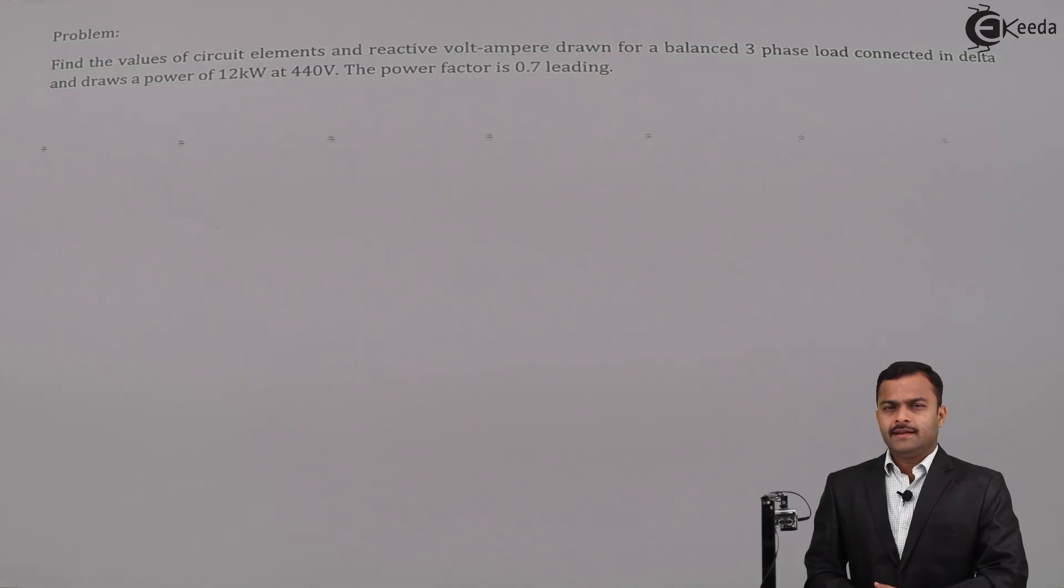Hi friends, in this video we are going to solve a problem based on three-phase circuits. The problem states: find the values of circuit elements and reactive volt-ampere drawn for a balanced three-phase load connected in Delta and draws a power of 12 kilowatt at 440 volt. The power factor is 0.7 leading. So let's start.